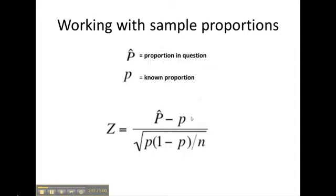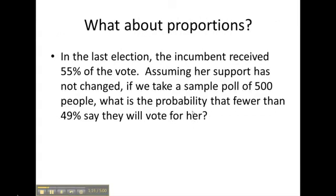So let's see how we would use this formula for our current problem. Back to our problem, the incumbent received 55% of the vote, but we are assuming her support has not changed. Therefore, the 55% is our known percentage. The sample size is 500, and the probability in question is 49%. So let's go ahead and fill that in our formula.